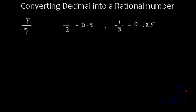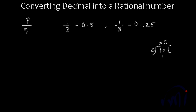We can write a rational number in the form of a decimal. How do we write it? We divide 1 by 2. Since 1 is a smaller number than 2, I'll put a decimal, then note down a 0 — that is actually dividing 1 into 10 parts. Now I can divide it 5 times: 2 fives are 10, and I get 0 as the remainder. So the decimal value of 1 by 2 is 0.5, and the decimal value of 1 by 8 is 0.125.